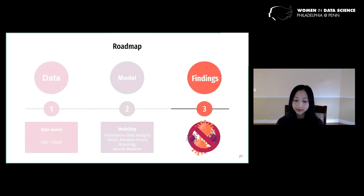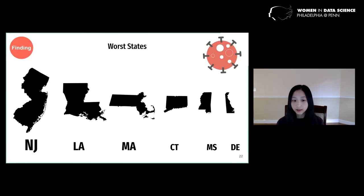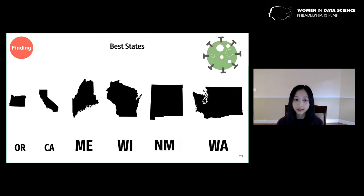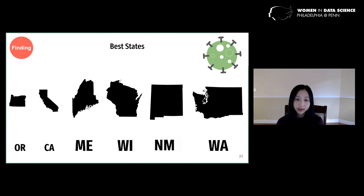Here is the list of the worst states — those most heavily impacted by COVID-19 — and here is the list of the best states. What this result is saying is that given two counties with identical socioeconomic characteristics, one in New Jersey, which was the worst state, and one in Oregon, which was the best state, the county in New Jersey will still have a higher death rate, probably due to state variations in pandemic timeline, social distancing policies, and geographical location.